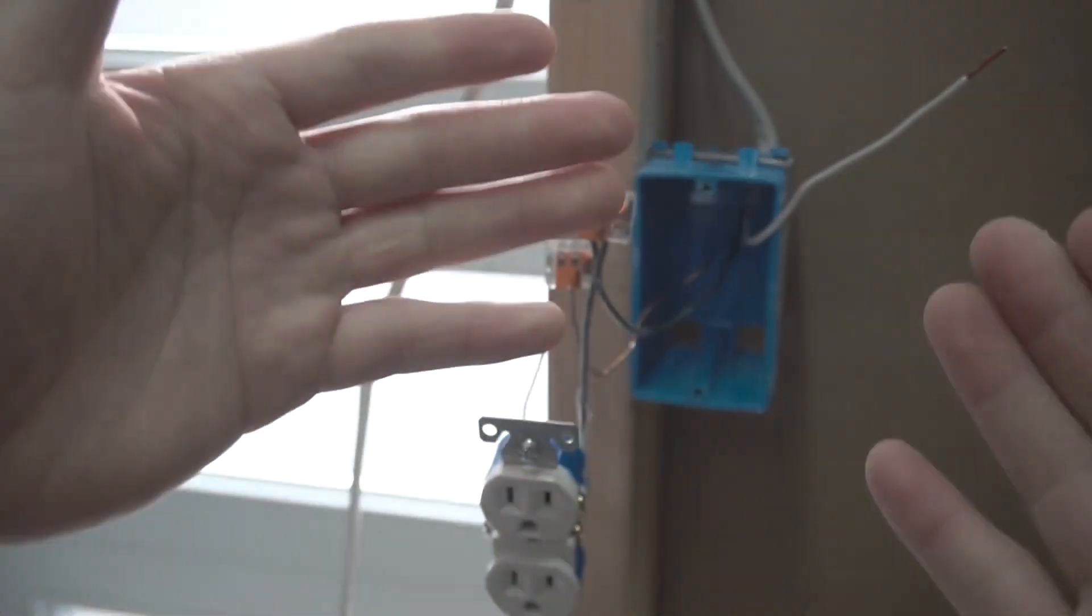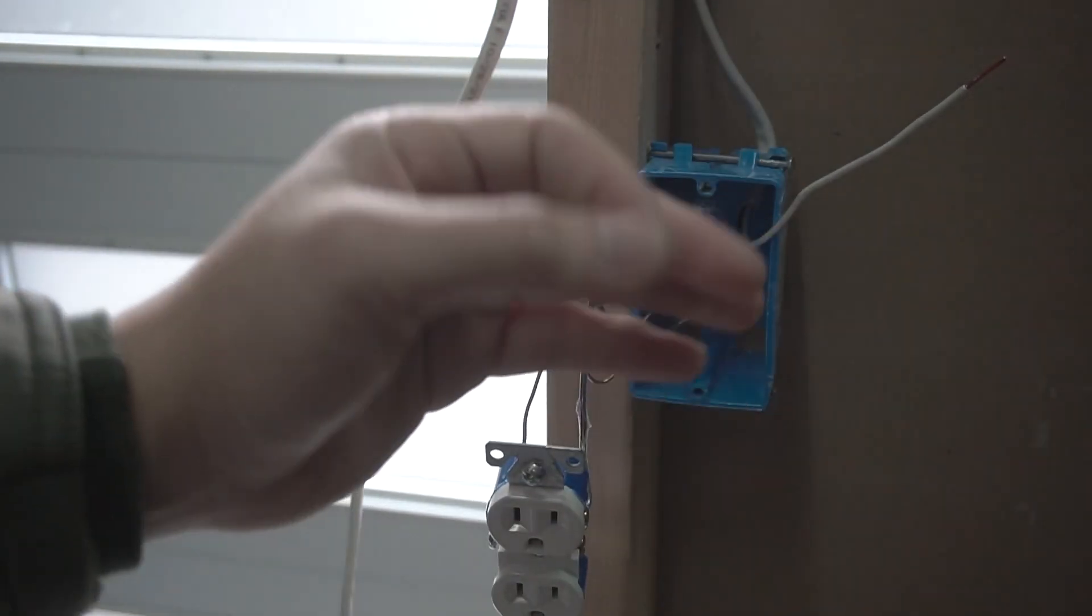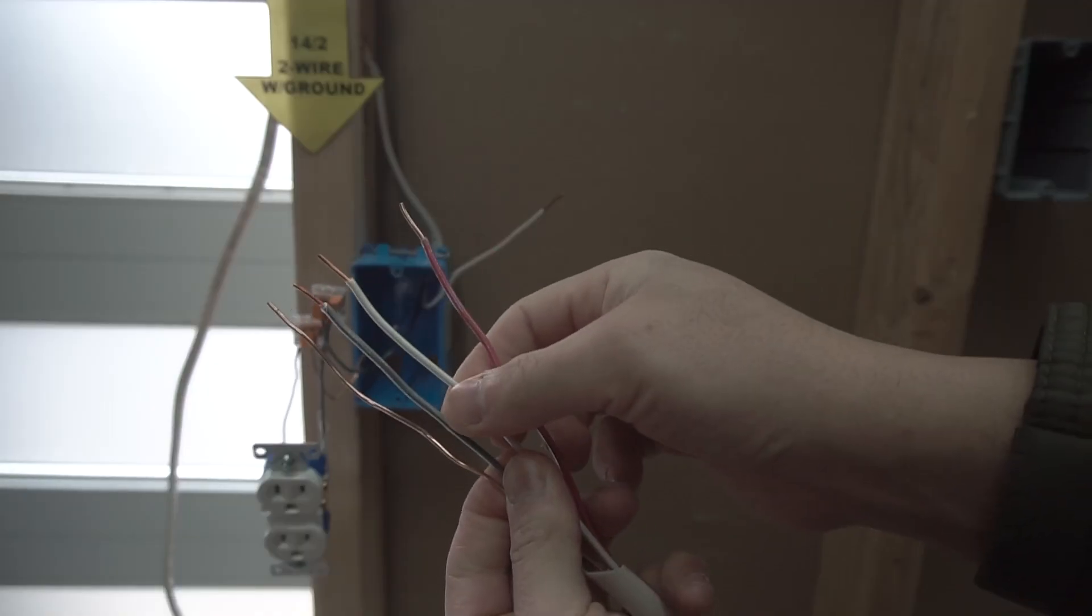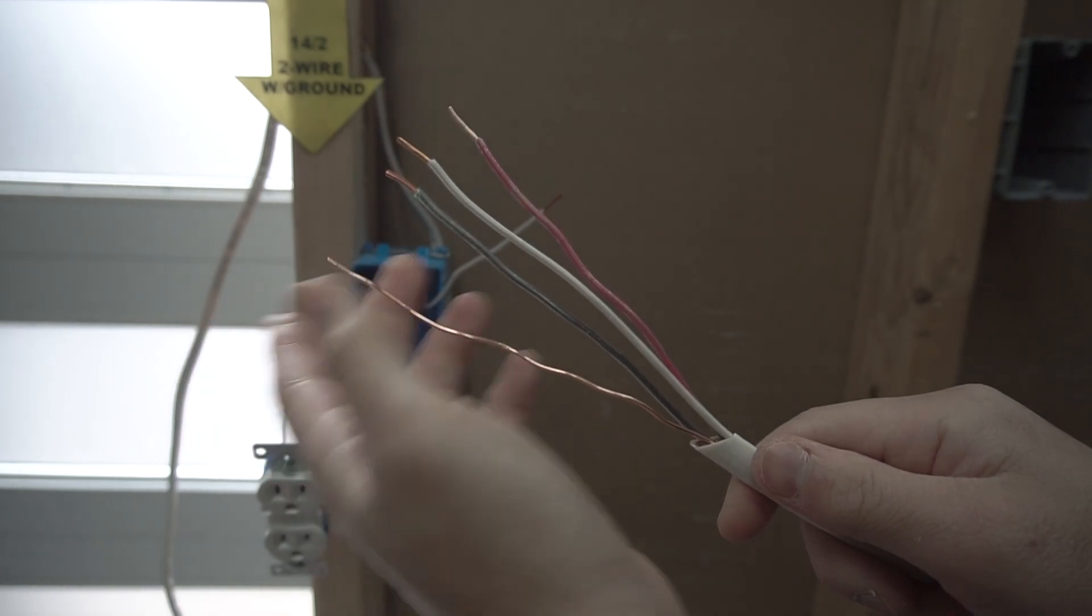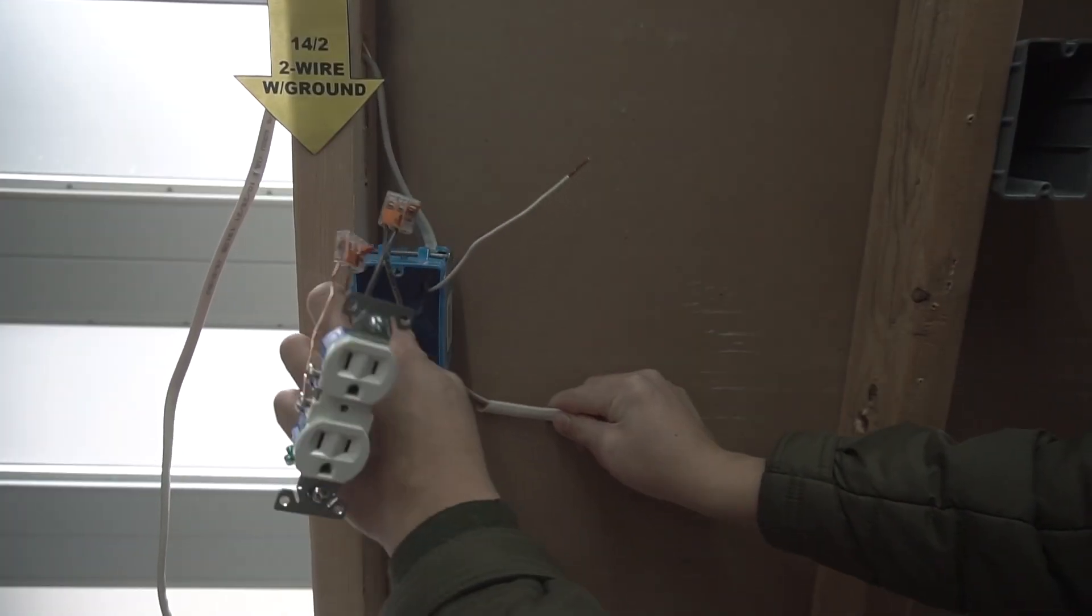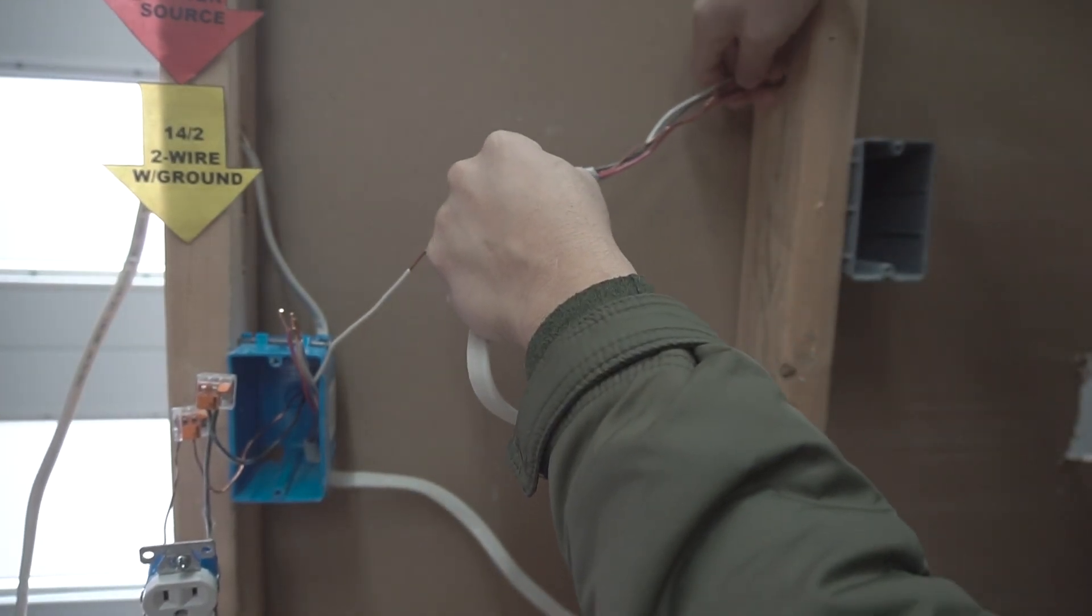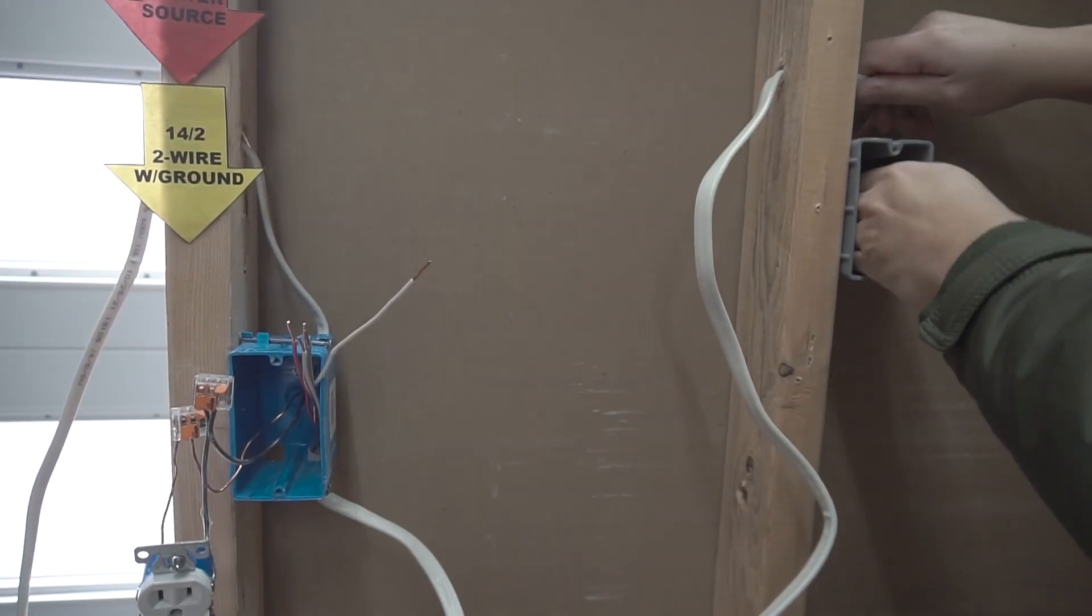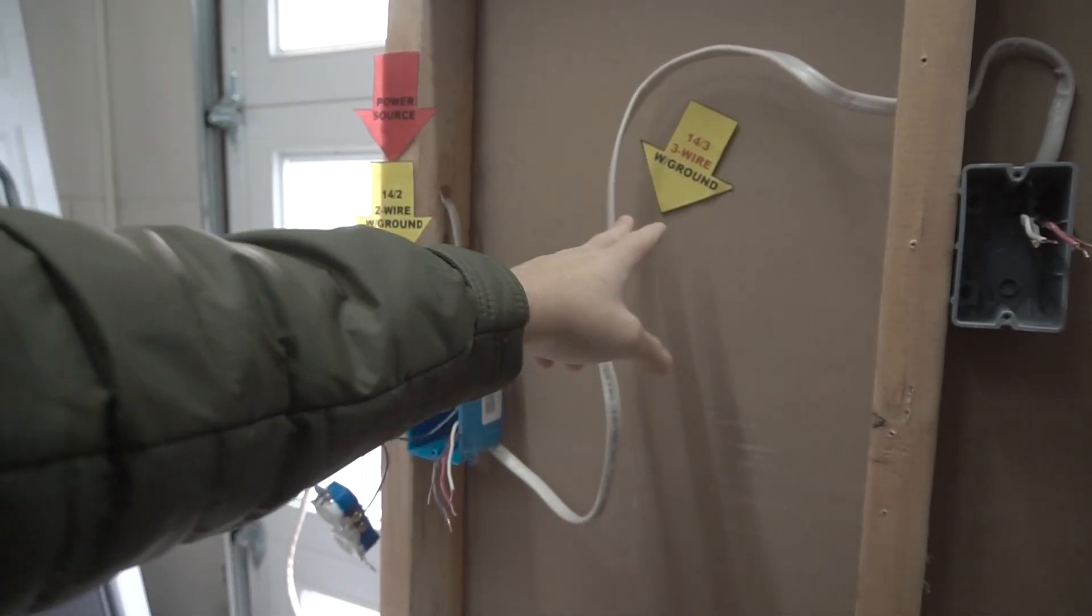We're going to introduce the next cable and we're going to feed it onto this J-Box which is going to be the 14-3. Hot red, the neutral, and the hot black, and the ground wire. Take the same 14-3, go through the stud. So I'm going to be labeling this cable 14-3, three wire with ground.